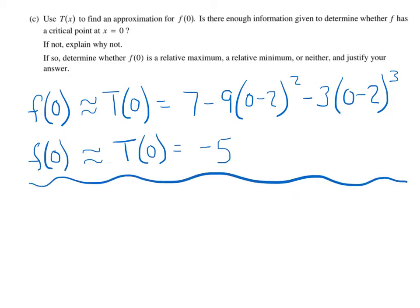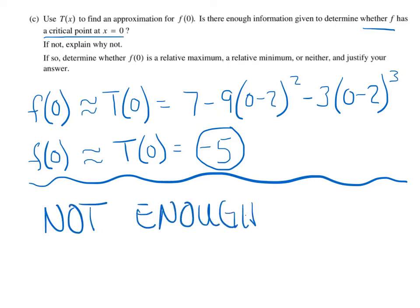Now, can we say with confidence whether or not f has a critical point at x equals 0? I mean, it appears not. We didn't get 0 for an answer here. But the key here is we have to say that we don't have enough information. Not enough info. And here's why. T(x) can supply exact information about x equals 2, but it's only an approximation for all other values of f.